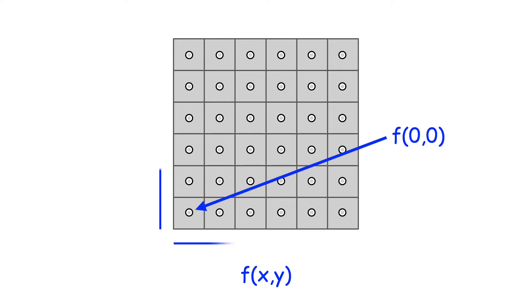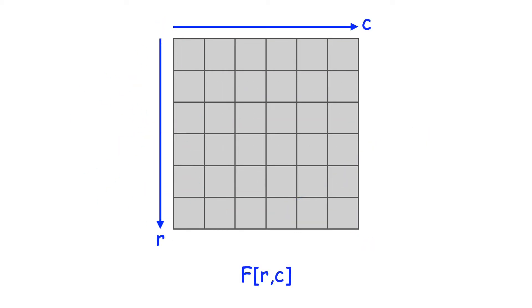X increases from left to right and Y from bottom to top. So F is the value of the function at this point. Now we're going to store the image as an array. Arrays are represented a bit differently, as rows and columns, with the origin in the top left.